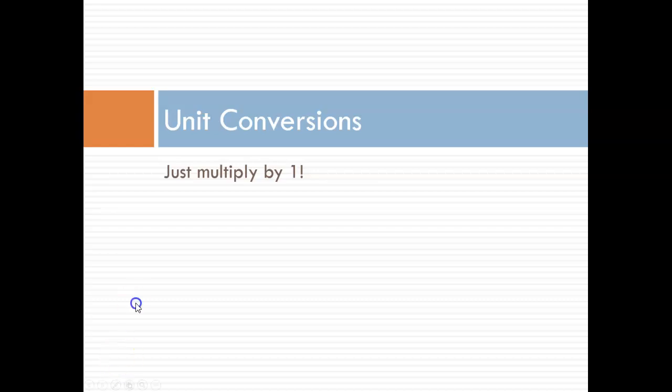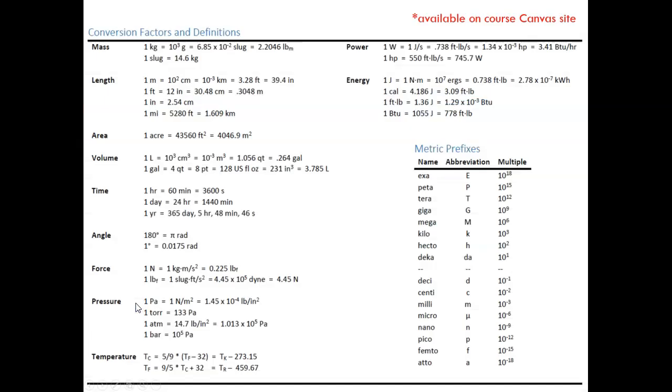What you see here is a list of conversion factors. There is a small area on the right that shows metric prefixes, but the bulk of the sheet is conversion factors. They are grouped by the dimension being measured, such as mass, length, area, and so on. I strongly encourage you to have a printed out copy of the sheet with you as you go through this course.